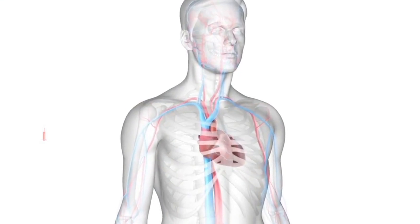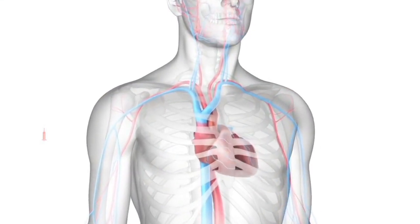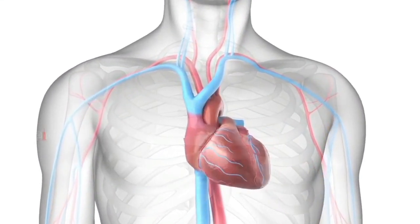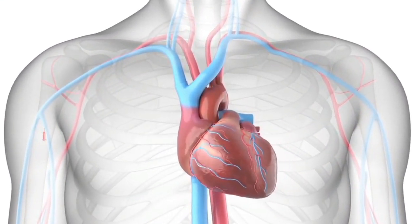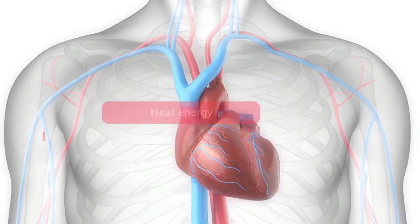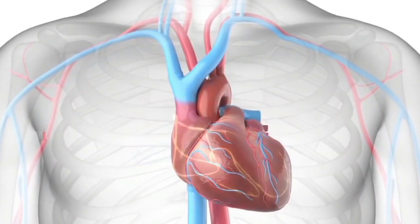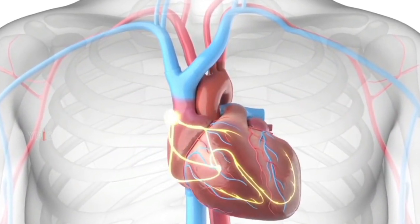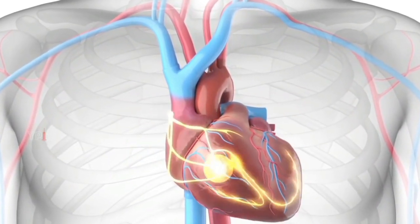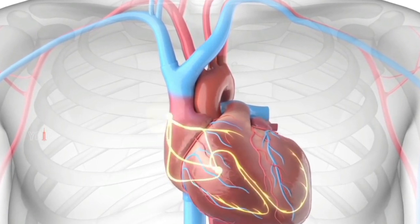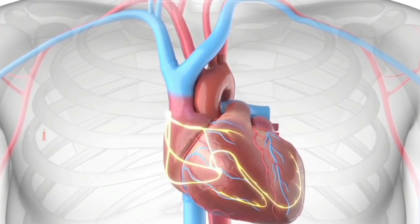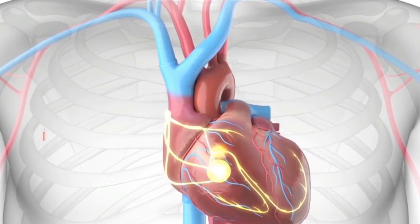Cardiac ablation is a procedure to treat heart rhythm problems referred to as cardiac arrhythmias. It involves the use of heat or cold energy to scar or destroy small areas of heart tissue, blocking the abnormal electrical signals that move through the heart and create rhythmic disruptions.